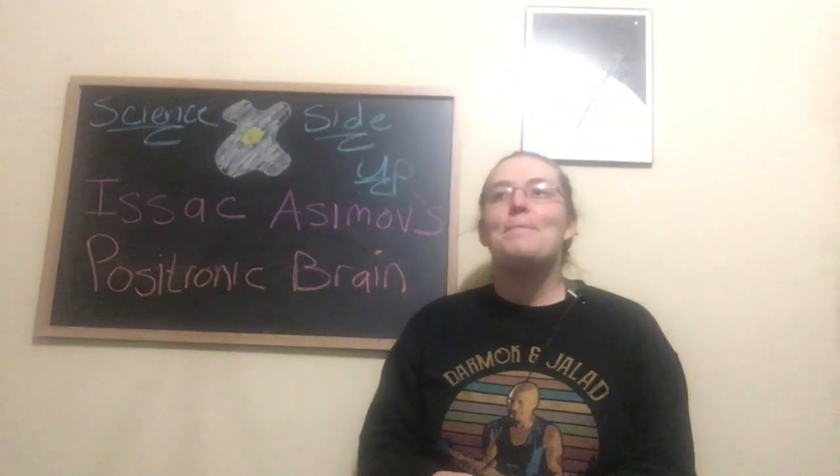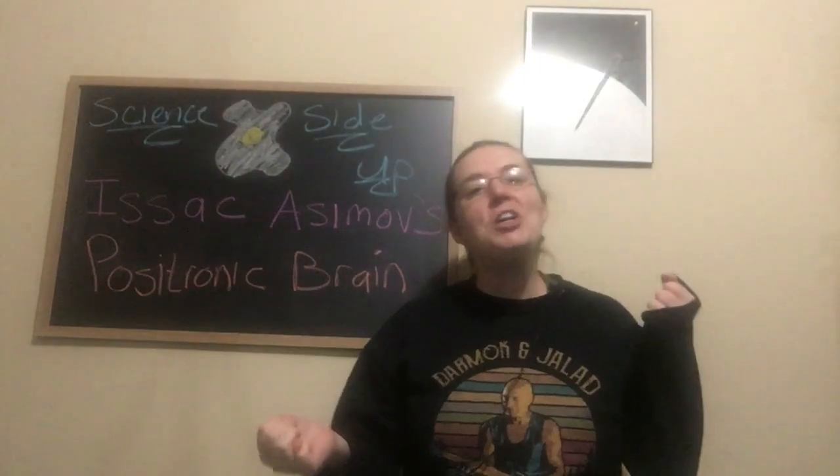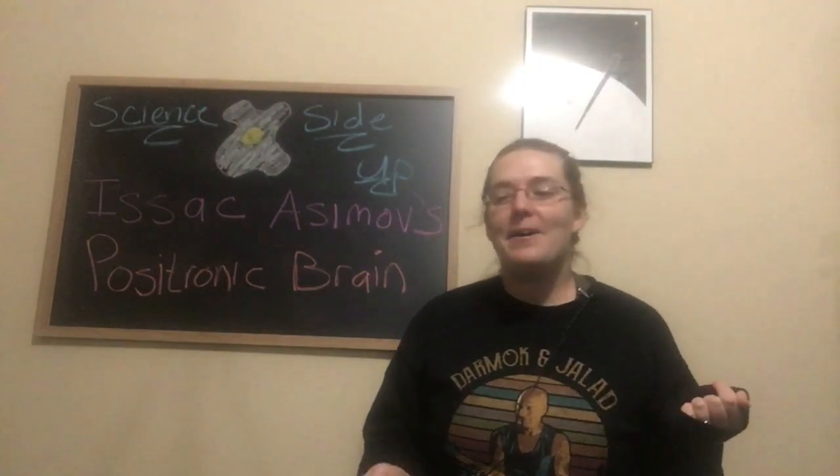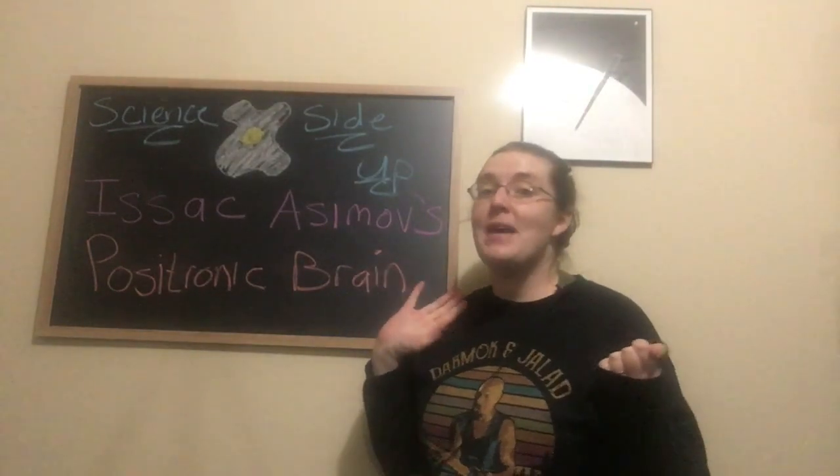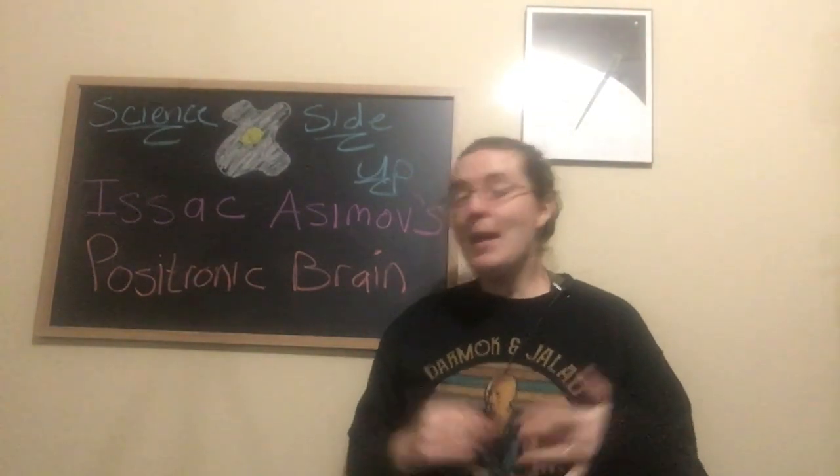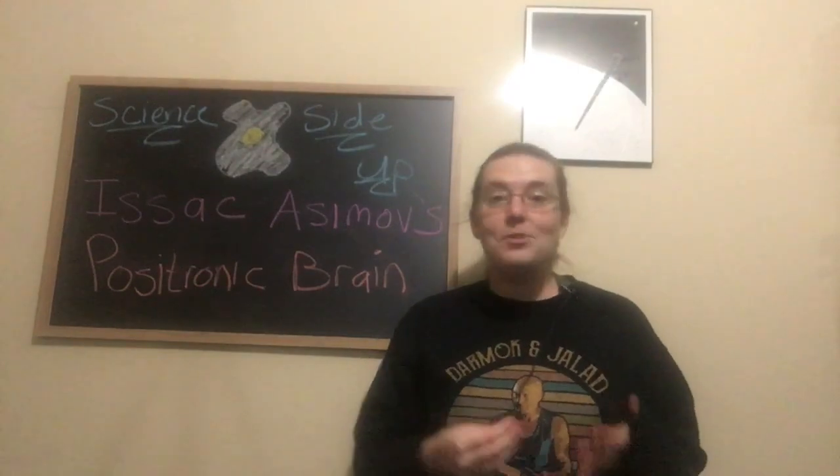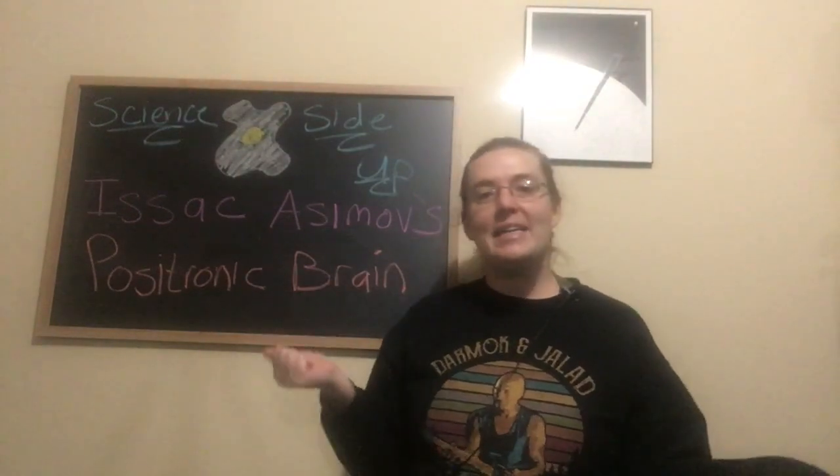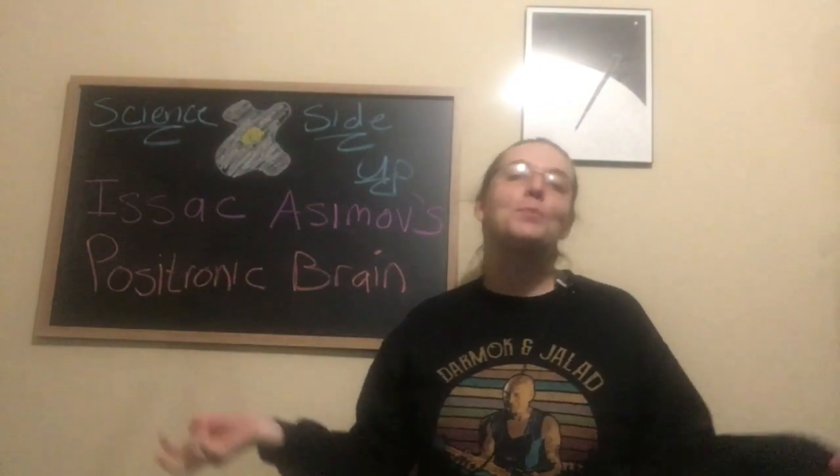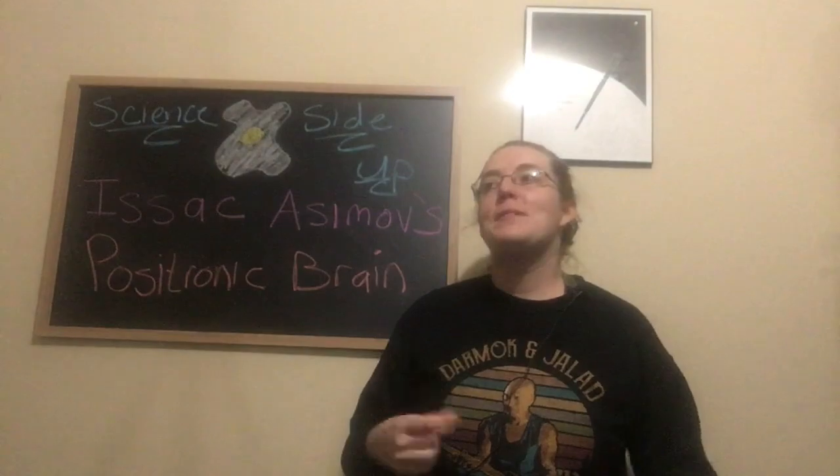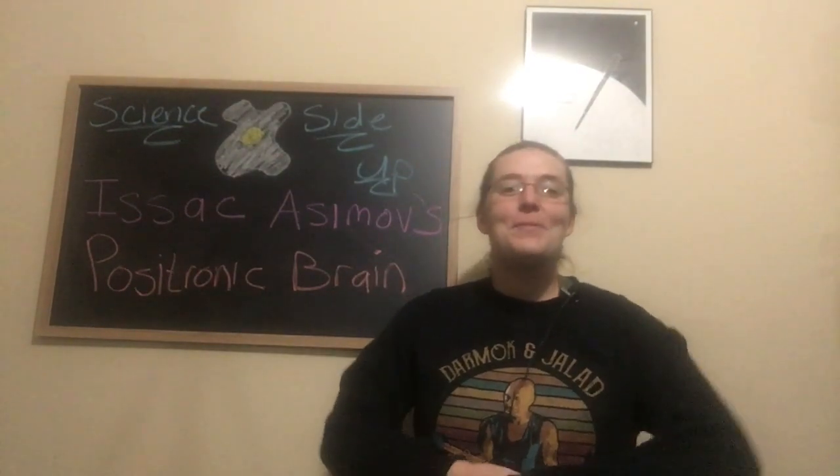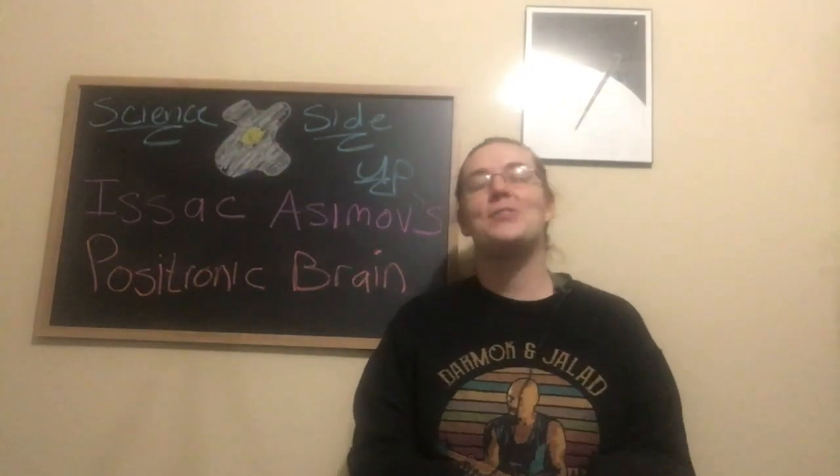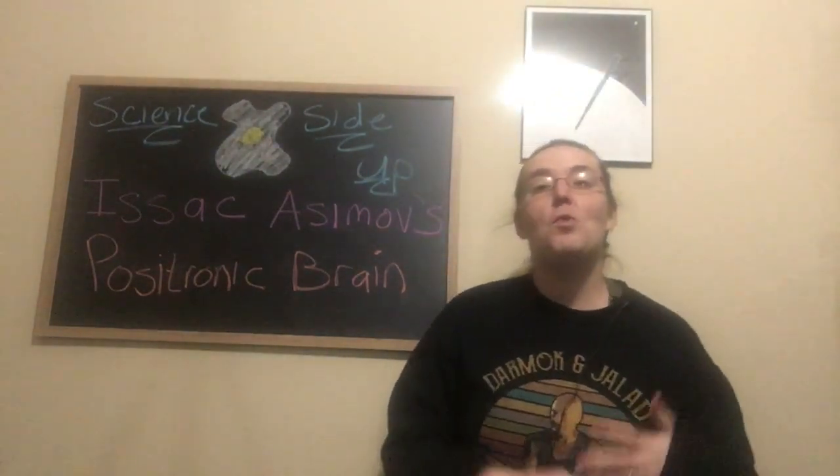And so now we're going to talk about beta radiation, which kind of rounds out the big three types of radiation. We'll probably talk about neutron radiation at some point, but these are the main three. Beta radiation is actually kind of special because it comes in two flavors: beta plus and beta minus. Like we discussed in those previous videos, the names for these things come from the very early 1900s, over a hundred years ago now.